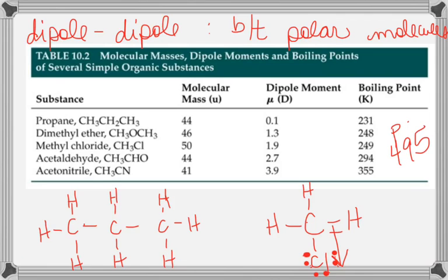The top right of the periodic table is the most electronegative. The most electronegative element is fluorine. How come it's not helium? If electronegativity increases bottom to top and left to right, helium is not the most electronegative because noble gases don't bond with anything — they don't react. So fluorine is the most electronegative element.